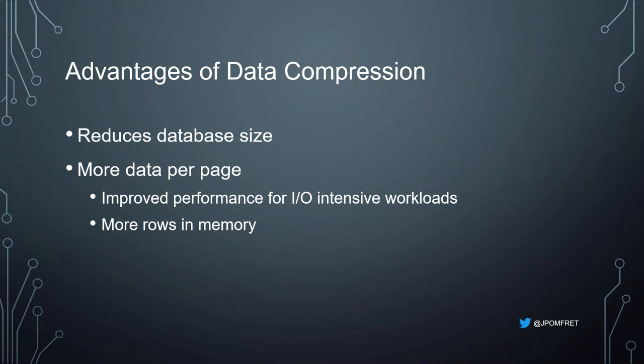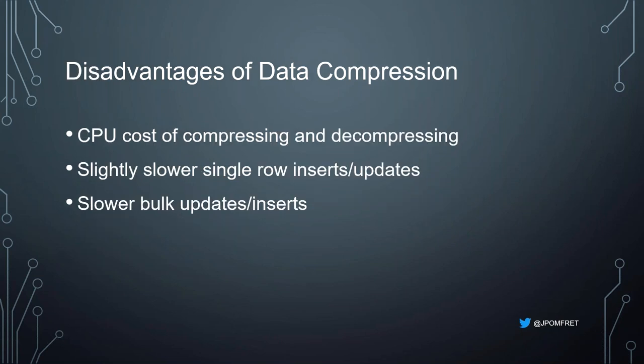The flip side is the cost of compressing and decompressing data, which is CPU cost. We're going to see slightly slower inserts and updates, and slower bulk inserts and updates. Microsoft had a white paper around when data compression came out in 2008, and they said it was about 10% CPU overhead for row compression — not a major disadvantage. Quite often the I/O gains balance off that CPU cost, and we'll look into these performance implications later on.